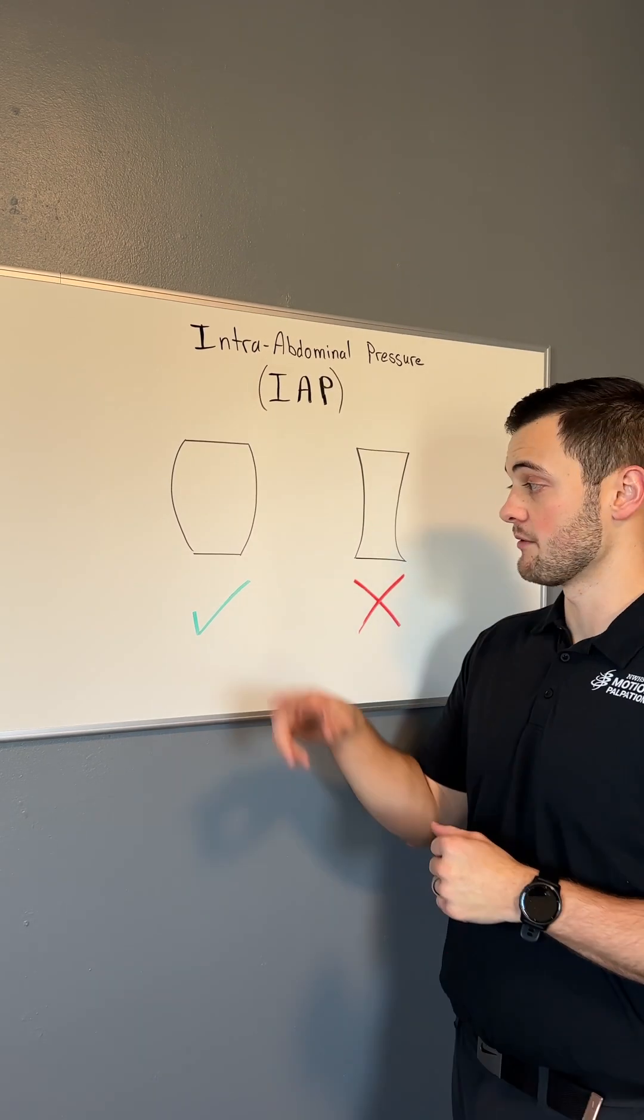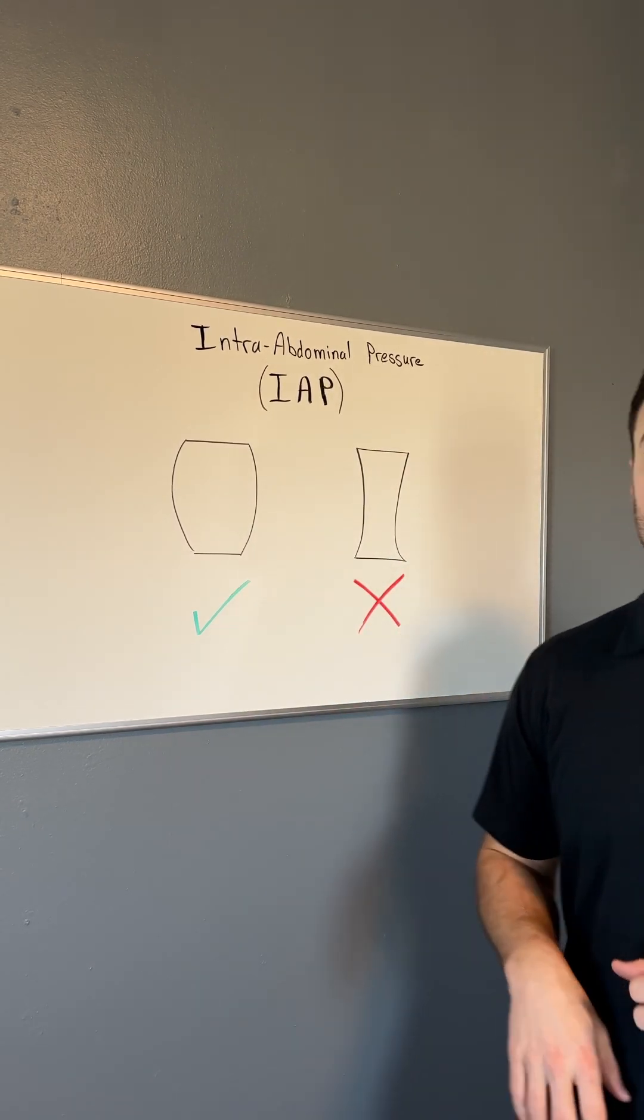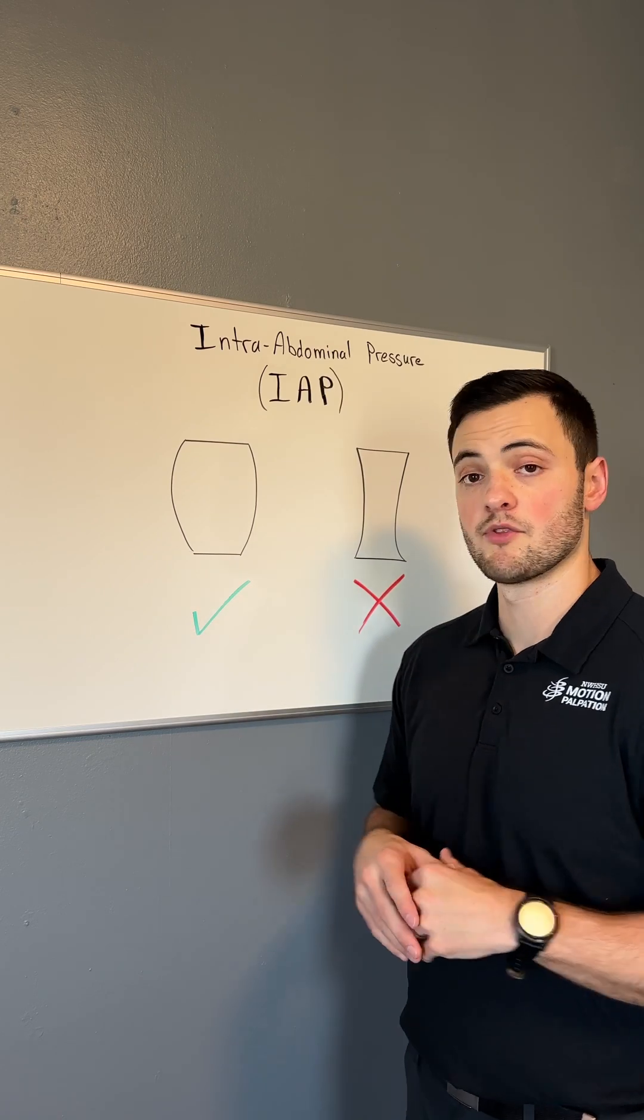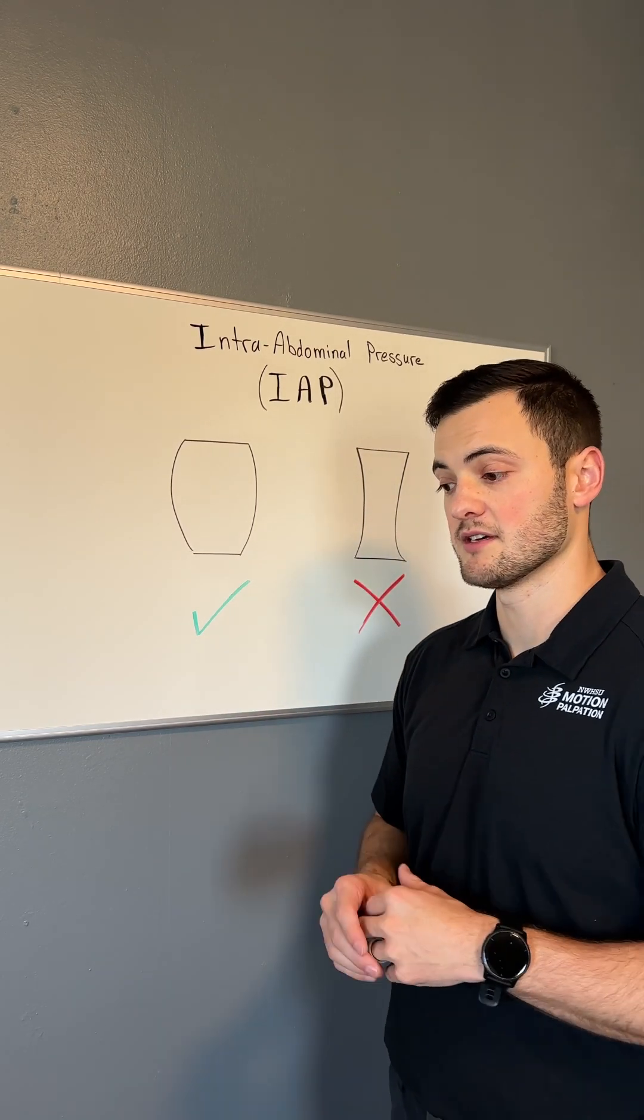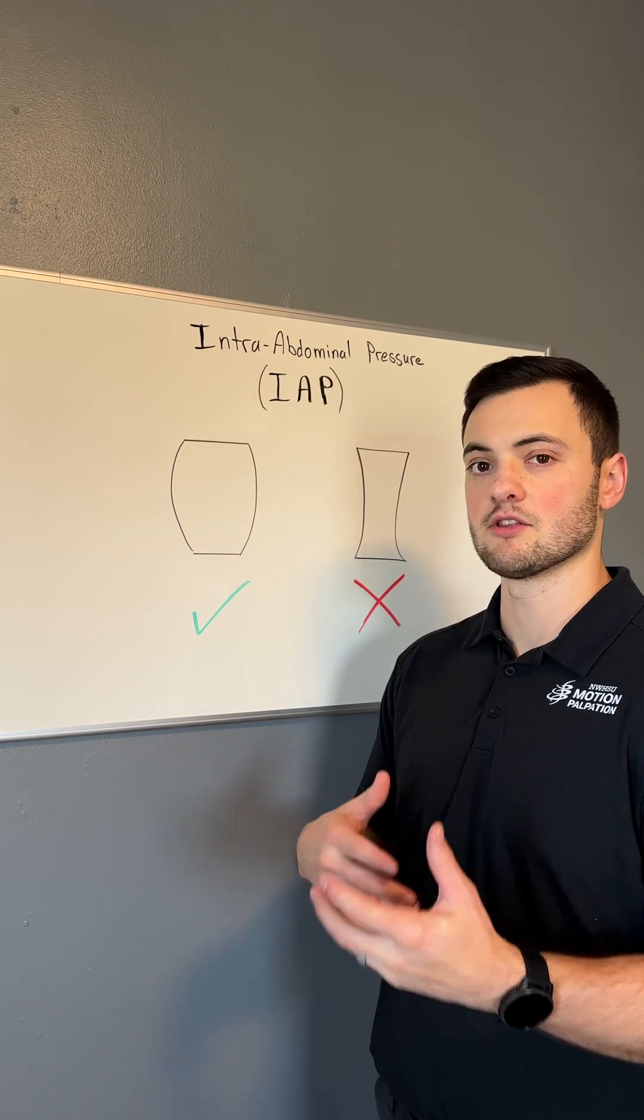Basically, these two drawings here - we have a barrel and an hourglass. The barrel is the correct position. If you can visualize this in your head, it's an easy concept but can also get lost in the weeds.